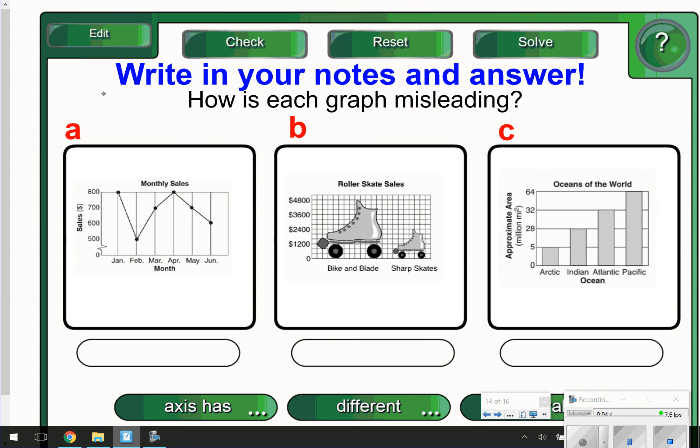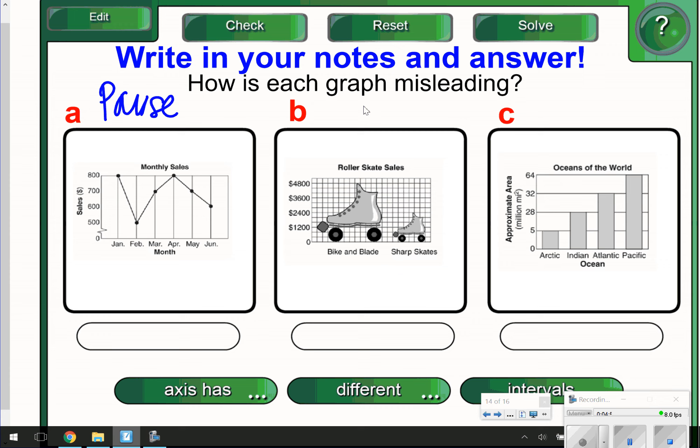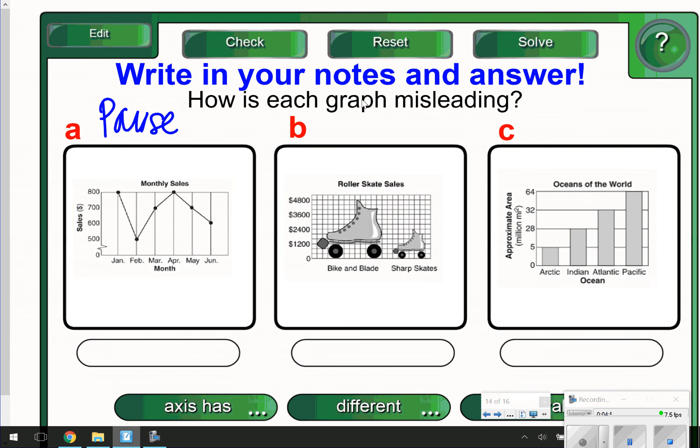Here's your last slide. You're going to, again, pause here and answer questions A, B, and C about how each graph is misleading. Make sure that you have the correct answer. Once you're done, go ahead and click play to end the video.